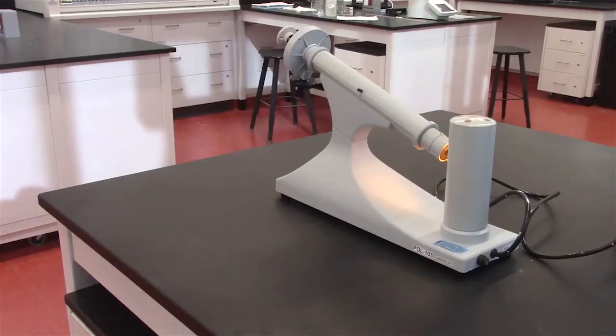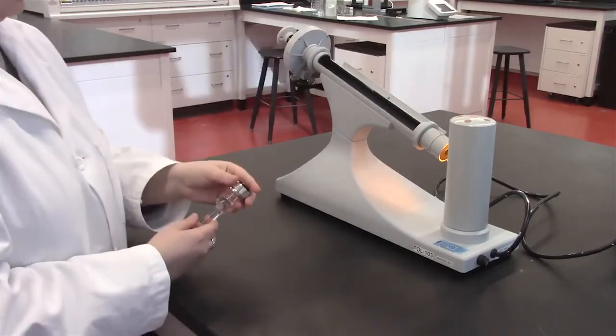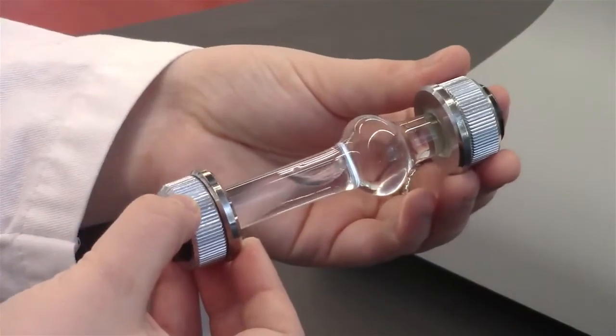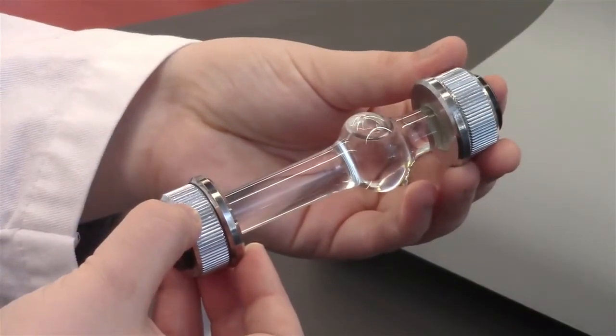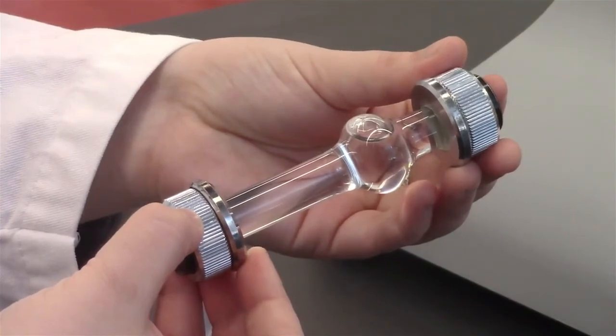If there are bubbles present, tilt the sample holder to ensure the bubbles are in the curved part of the holder and not in the top or bottom of the sample holder.